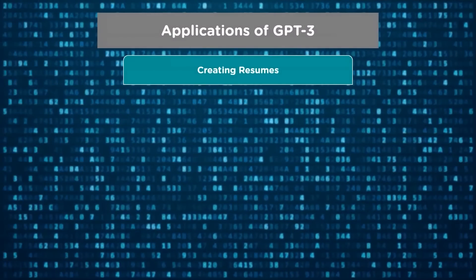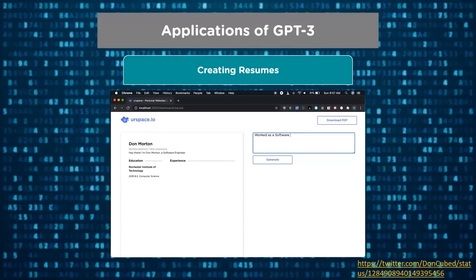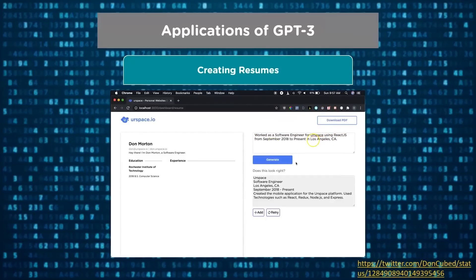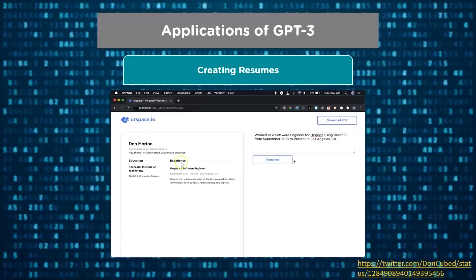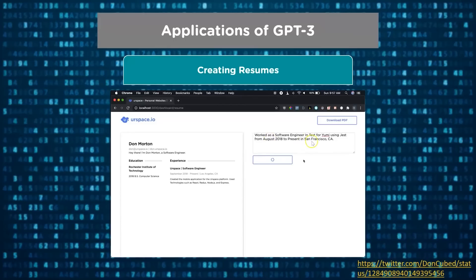The next application of GPT-3 is creating resumes. GPT-3 allows you to create resumes by looking at a few lines of text related to your work experience, educational background, projects you have worked on, hobbies, and other details. Here the user inputs personal information — his designation as a software engineer, the company he's working for, his work on ReactJS since September 2018 in Los Angeles. The resume updates automatically on the left. When the user updates his information — changing to August 2018 and San Francisco, California — those changes are automatically reflected in the resume.